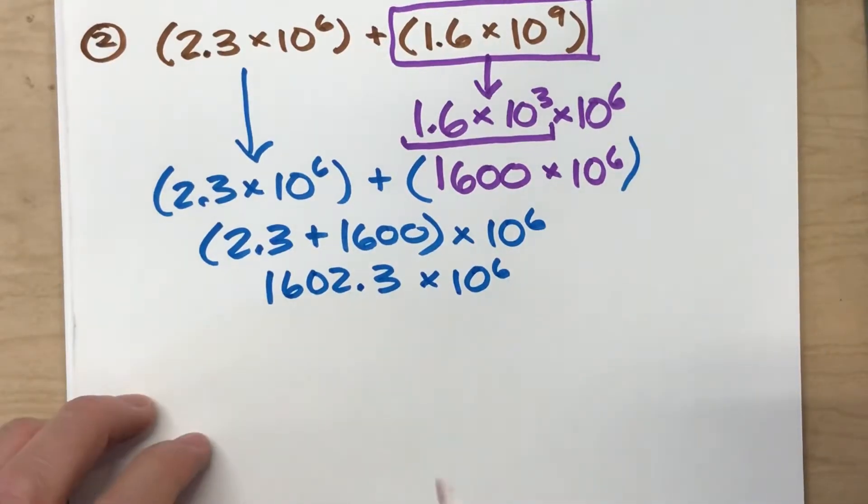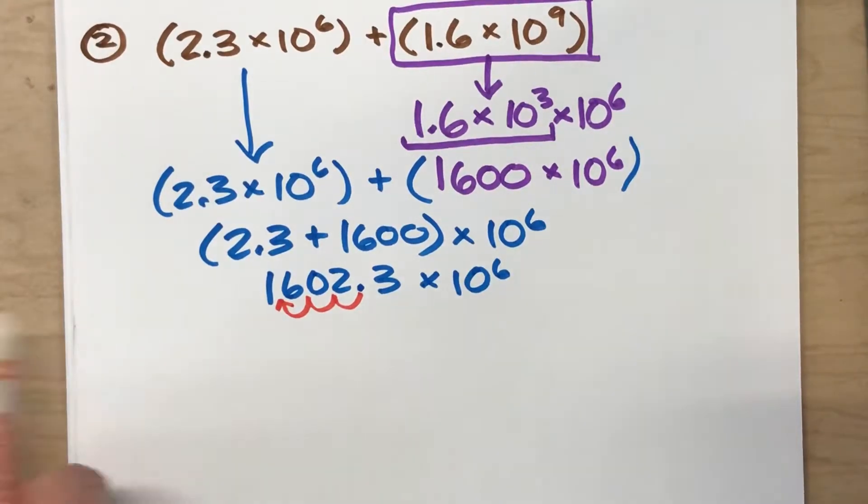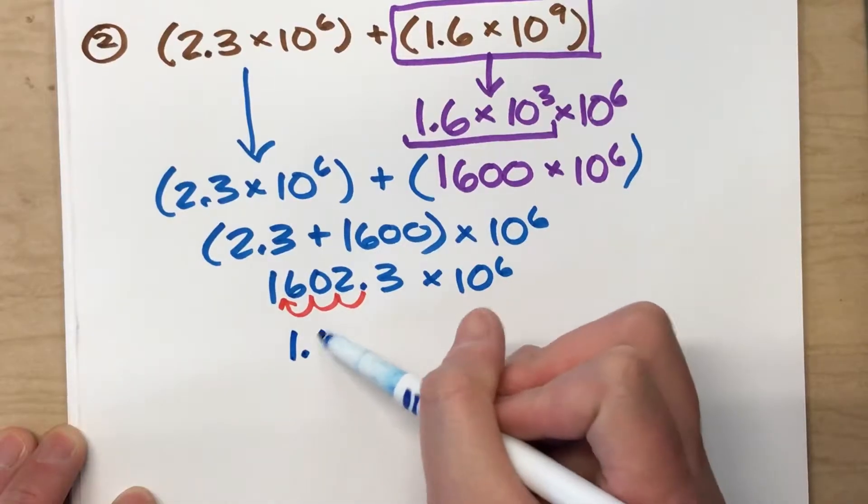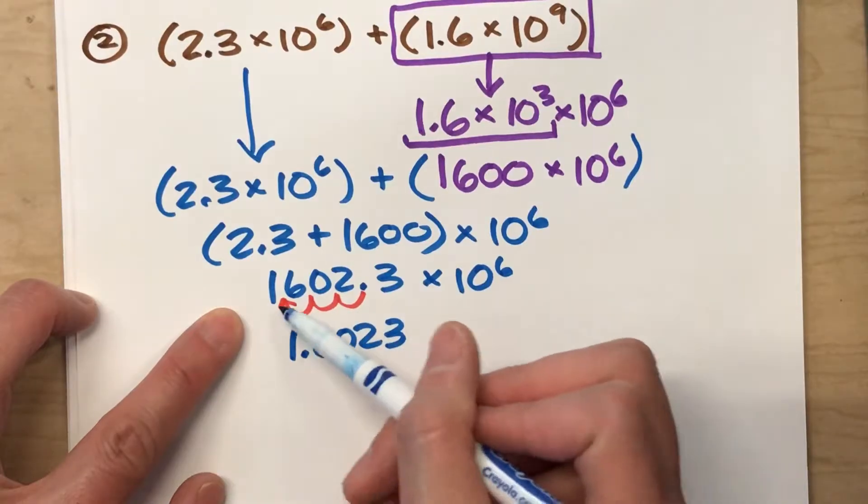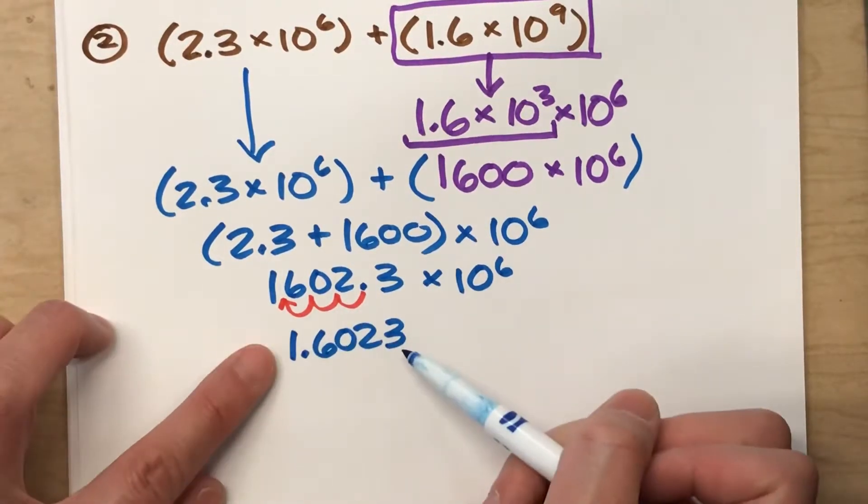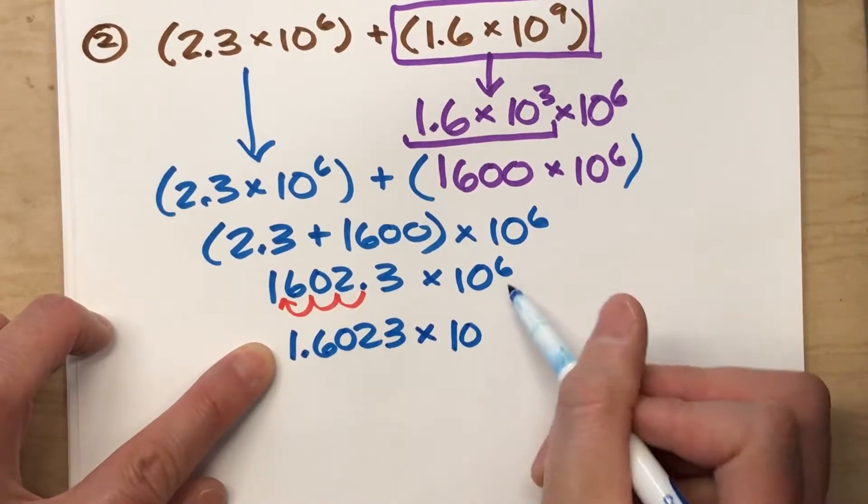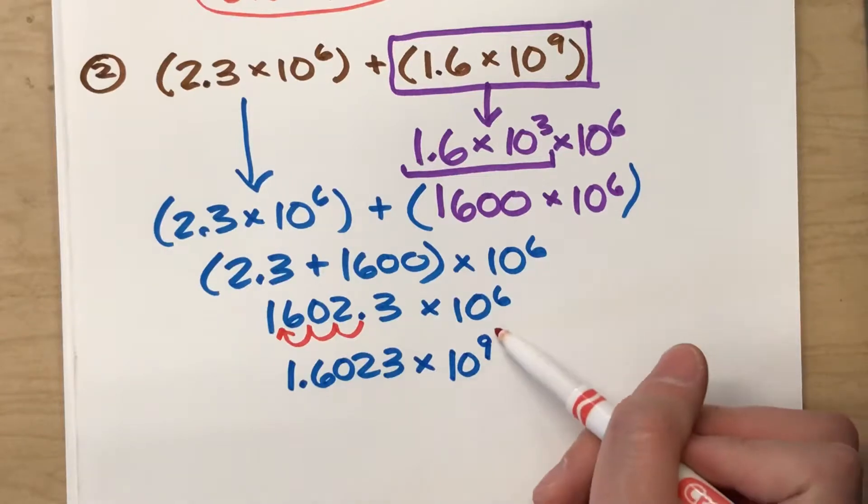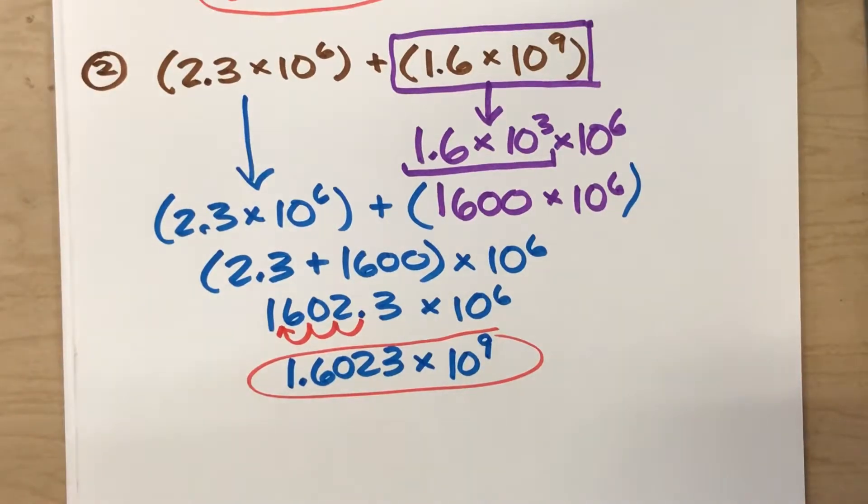In order for it to be in scientific notation, I'd have to move that decimal over 3 places to that spot right there. I'd have to move it over and make it 1.6023. But the rule is, since I made this coefficient smaller by 3 decimal places, I need to make the power of 10 bigger by 3 decimal places to compensate for it. So this is actually the answer to my original addition problem in scientific notation.